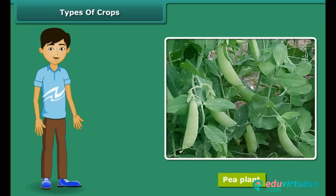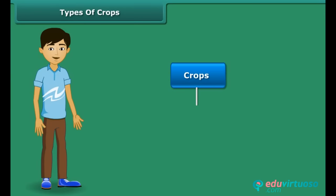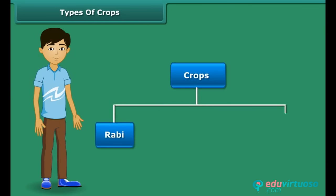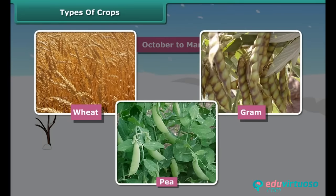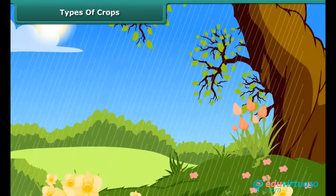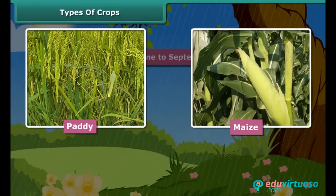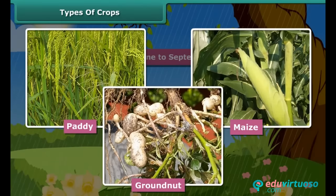If you wish to grow a pea plant in the hot season, you can't do it. In India, crops are broadly classified into two categories on the basis of the season they are grown in — Rabi crops and Kharif crops. Rabi crops are usually grown in the winter season from October to March. Wheat, gram and peas are examples of Rabi crops. Kharif crops are usually sown in the rainy season, generally from June to September. Paddy, maize, groundnut etc. are some common examples of Kharif crops. To grow crops, various activities are performed which are known as agricultural practices.